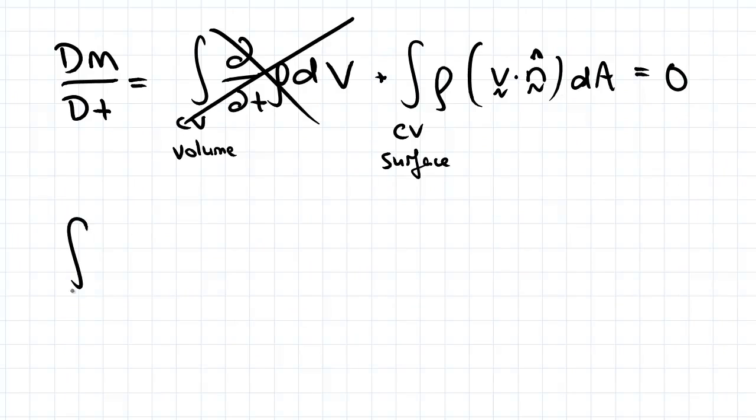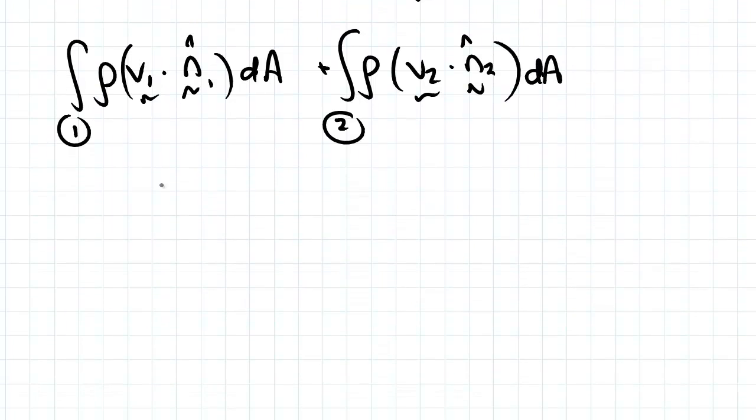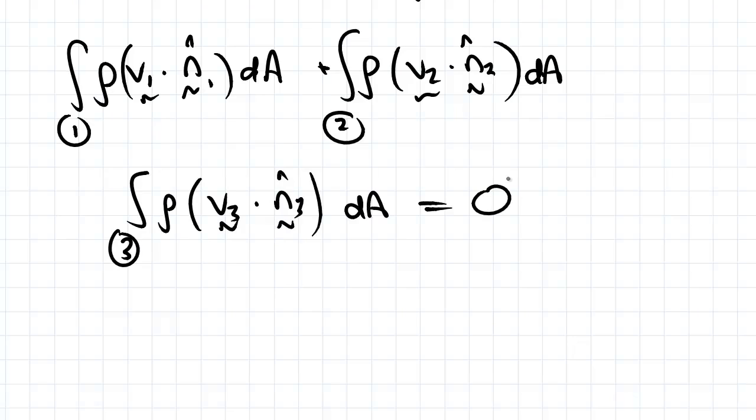So now we need to apply the second term of the mass conservation equation for each of those surfaces. For the first surface, we'll have rho, which is constant, v1 dot n1, dA. For surface 2, we'll have rho, v2 dot n2, dA. For surface 3, we'll have rho, v3 dot n3, dA. All of that equal to 0.